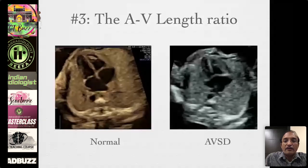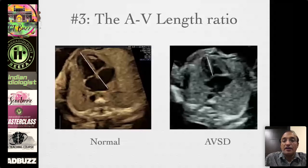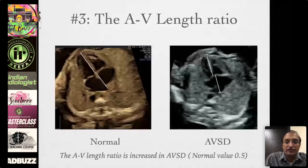The third feature is the atrioventricular length ratio. Normally, the ventricular length will be more than the atrial length. In AV septal defect, there is a downward displacement of the valves, so the AV length ratio will be increased. That is the third feature.